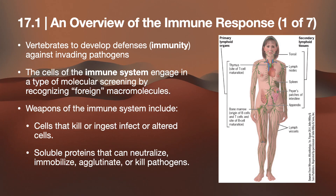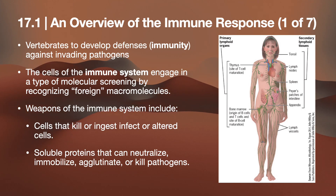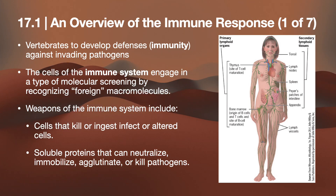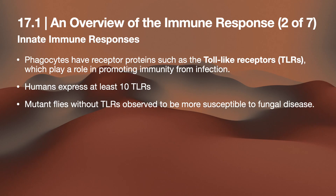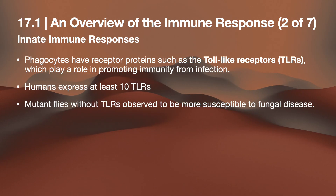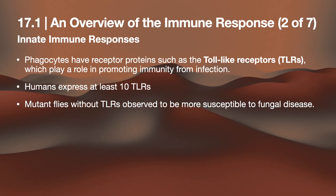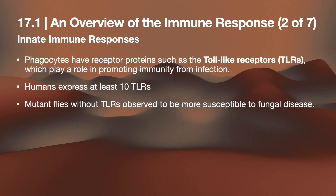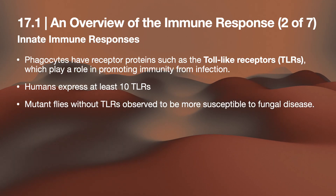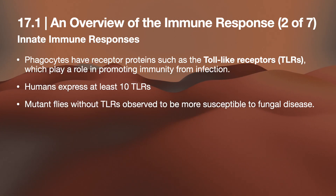The cells of your immune system engage in molecular screening by recognizing foreign macromolecules. The weapons of the immune system include cells that kill or ingest infected or altered cells, and soluble proteins that can neutralize, immobilize, agglutinate, or kill pathogens. For innate immune responses, phagocytes have toll-like receptors — TLRs — embedded on their cell surface. At least 10 TLRs are expressed by humans, and mutant flies without TLRs are more susceptible to fungal diseases.